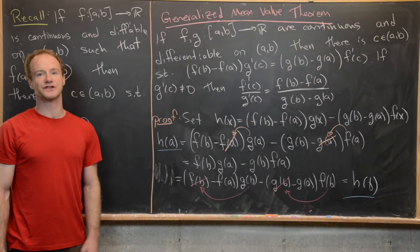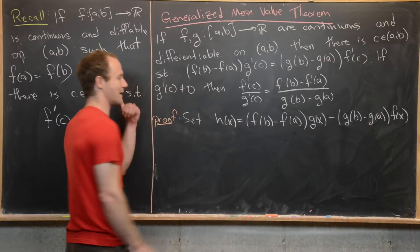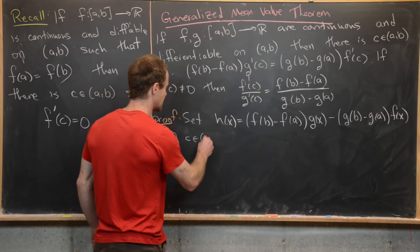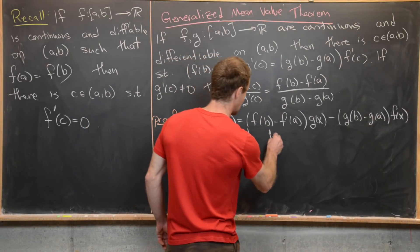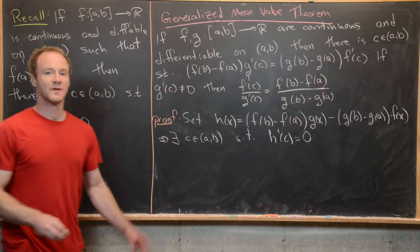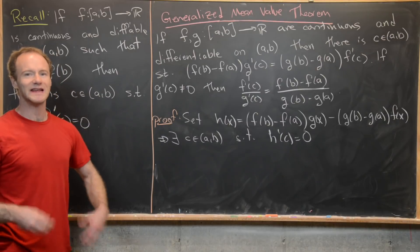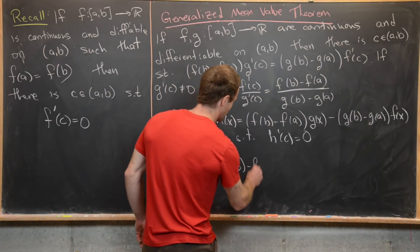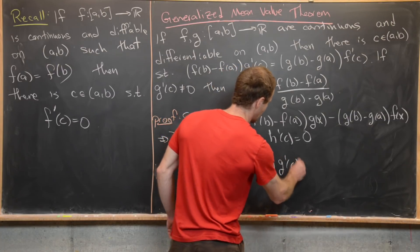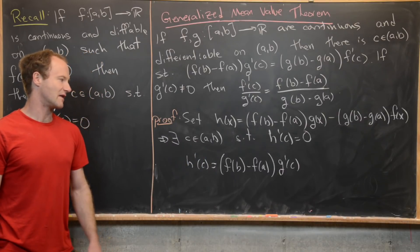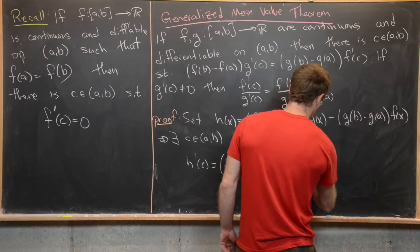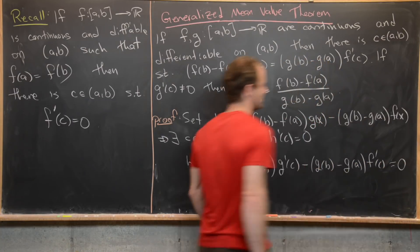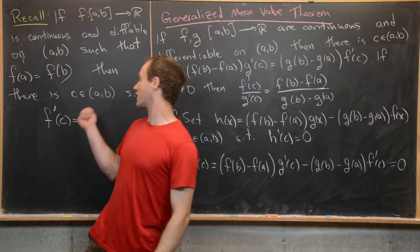Since h(x) satisfies the hypotheses of Rolle's theorem, there exists some c on the open interval (a, b) such that h'(c) = 0. Since we know the structure of h(x), we can compute h'(c) = [f(b) − f(a)] · g'(c) − [g(b) − g(a)] · f'(c), using the constant multiple rule. This equals zero because we chose c according to the conclusion of Rolle's theorem.